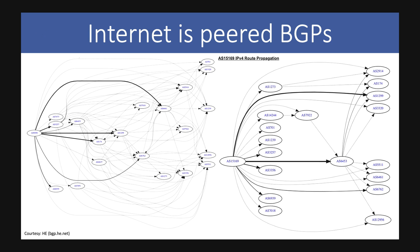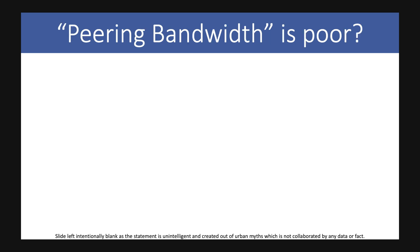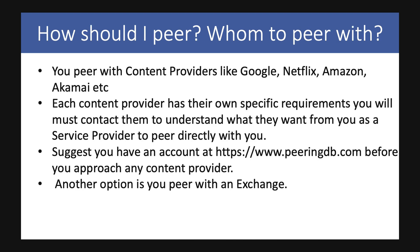Peering is fundamentally a BGP concept. It's not something you only do with content providers — you peer with your transit providers through BGP as well. So if you're still saying peering bandwidth is poor, that's simply a misconception. Peering is a BGP concept: you peer with your BGP neighbor, establish a connection, get their routes — that's all there is to it. If you still think peering bandwidth is poor, you need to go back to the start of the video.